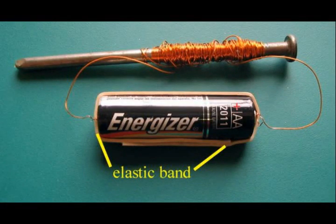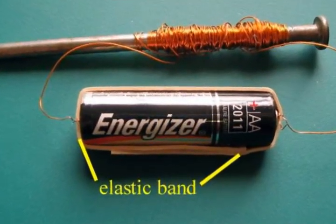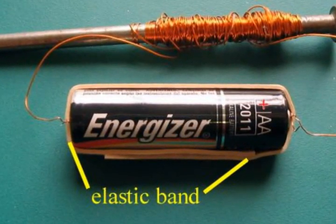You can use an elastic stretched around a AA battery to connect your electromagnet. Push the wires under the elastic at the plus and minus ends.